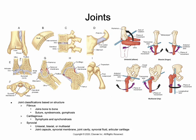Cartilaginous joints are either a symphysis or a synchondrosis. A symphysis is a cartilaginous joint where bones are united by a pad or disc of fibrocartilage, with a thin layer of hyaline cartilage usually covering the articulating surface. The thick pad of fibrocartilage acts as a shock absorber or stabilizer. Examples include the symphysis pubis, which holds the two pubic bones together, and the intervertebral discs, which join the bodies of the vertebrae.